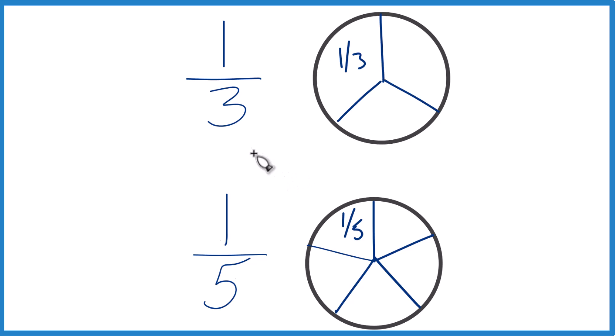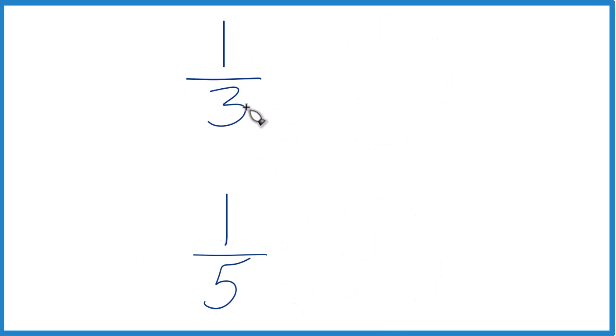Here's another way you can do it. You could find a common denominator. So I'm going to multiply three times five here. That'll give me 15. And then down here, I'm going to multiply five times three, and that'll give me 15. So now, I have the same denominators.